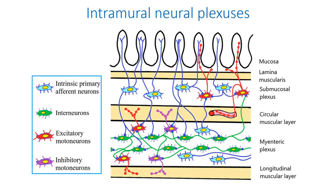Subsequent researches confirmed Dogel's data in general. But the use of modern techniques including electron microscopy, histochemistry, immunohistochemistry, dye injection and tracing methods allow describing subtypes of Dogel types and discovering new types. The up-to-date classification includes about 20 types described by different authors in various species. It takes into account the shape of neurons, their physiological properties, specific staining, the structures they innervate, the transmitters they utilize and the connections they receive.